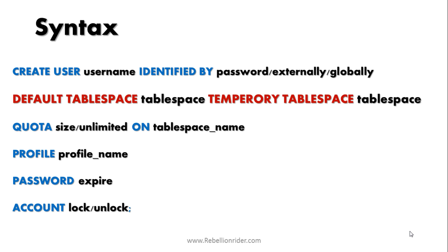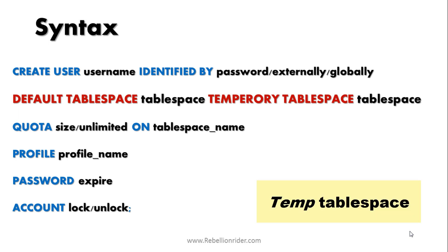After that we have TEMPORARY TABLESPACE. All the temporary segments created by this user get stored here — temporary segments such as temporary tables. Similar to DEFAULT TABLESPACE, you have to specify the name of the temporary tablespace here, but make sure the tablespace you specify must be a temporary tablespace. This is an optional clause. If omitted, temporary objects get stored in the database default temporary tablespace, which is TEMP. I will do a separate video on tablespaces after completing this series.